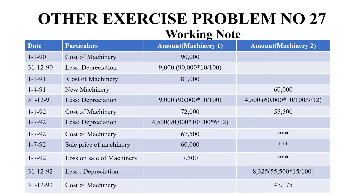For the second machinery, the balance is 55,500 as on 1992. At the end of 1992, they changed the method to the Written Down Value method at 15% — without retrospective effect. We calculate: 55,500 × 15/100 = 8,325. The cost of machinery as on 31/12/1992 or 1/1/1993 is 47,175.